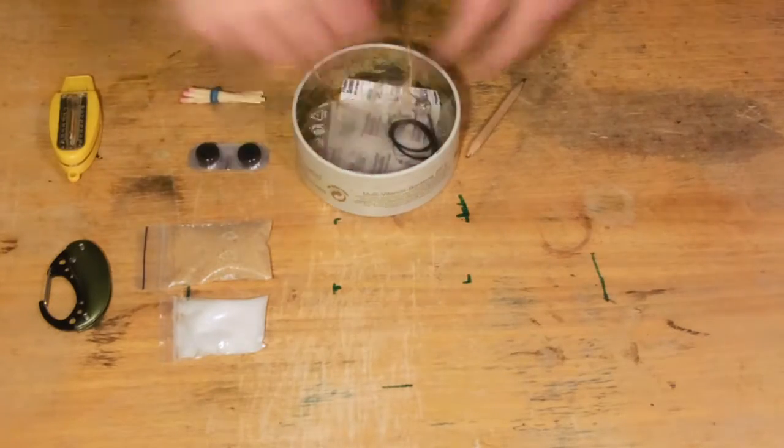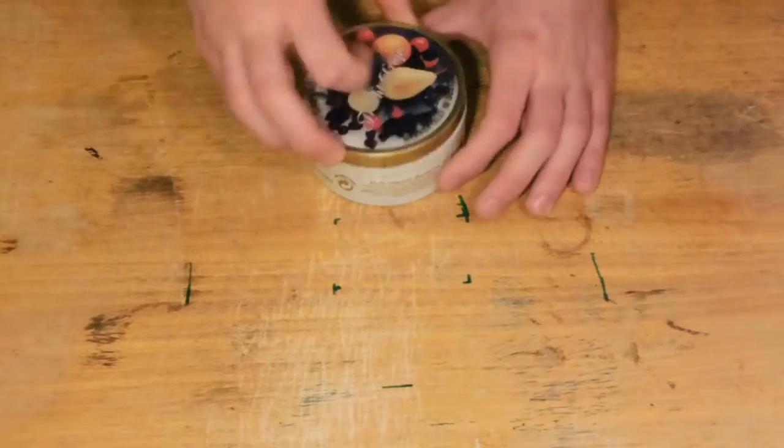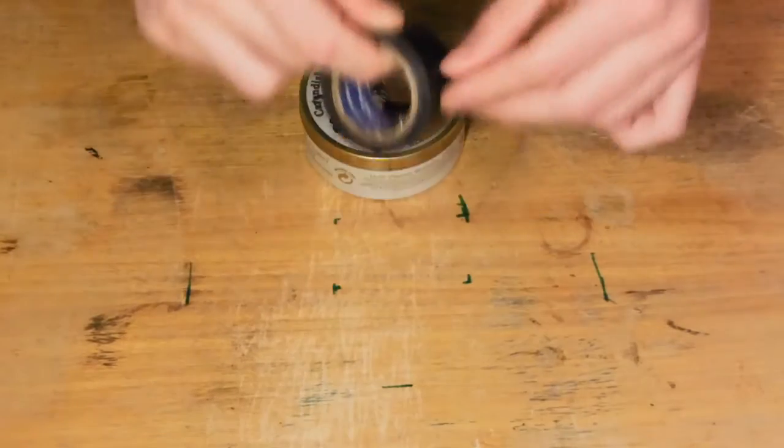And lastly, put all of your survival equipment into small can and seal the lid with a tape. Not only will it be waterproof, you can also reuse the tape if necessary.